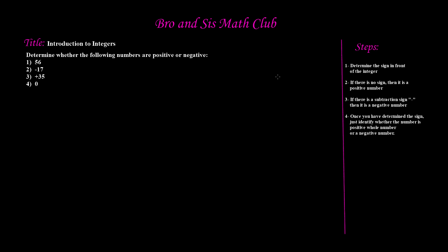The main thing that you need to keep in mind for this lesson is that there can only be two categories when identifying whether an integer is positive or negative. It can either be a positive or a negative. So that means you only have two things that you can say — whether it's a positive number or it's a negative number.